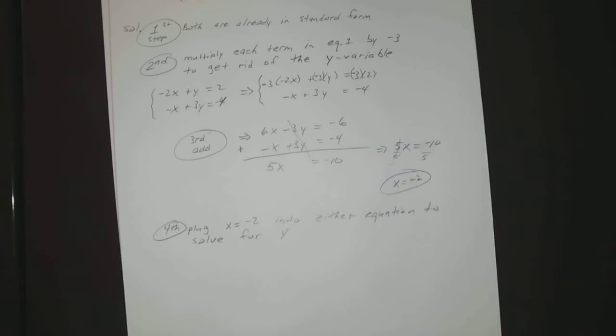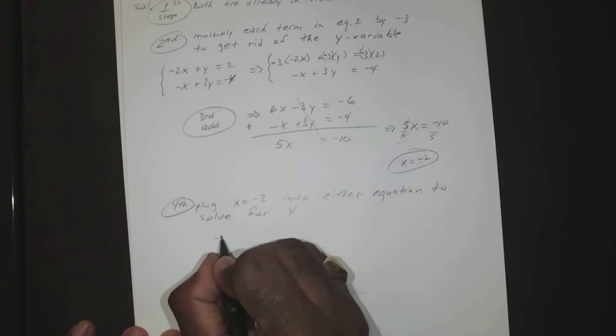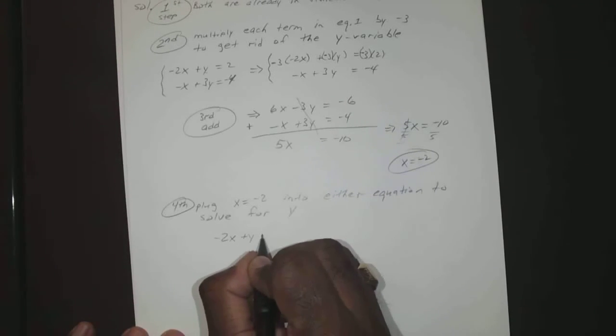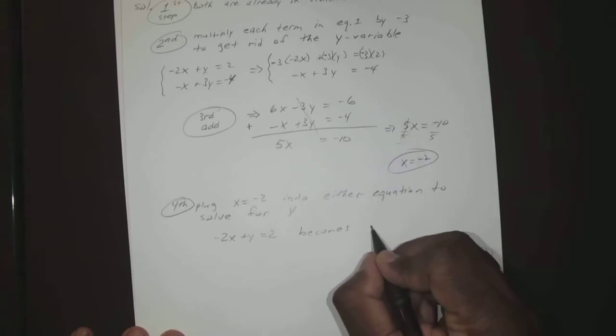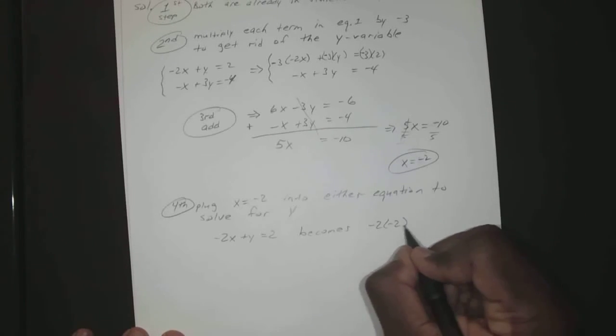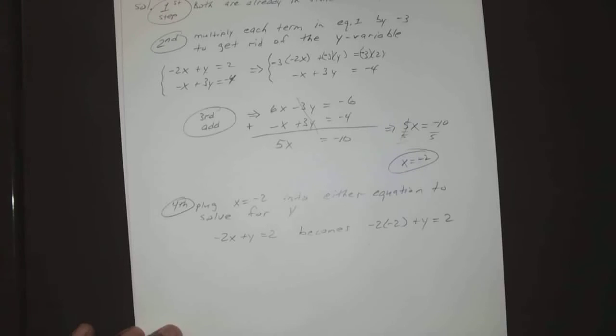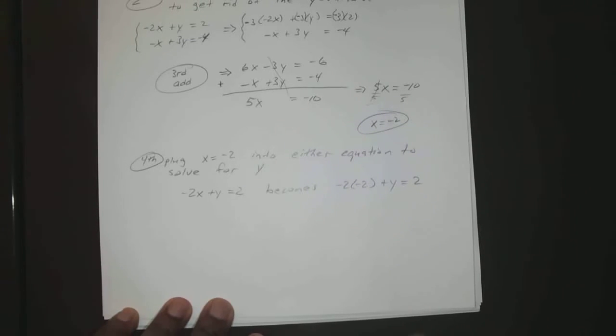Okay, so if we have -2x + y = 2, that becomes -2 times -2 plus y equals 2, which gives you 4 + y = 2.